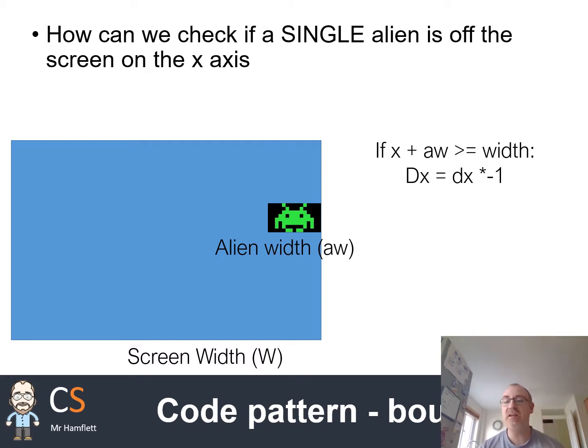If you times any number by minus one, it becomes negative. If you times a negative number by minus one, it becomes positive. So effectively, it flip-flops between direction, which is nice and easy.